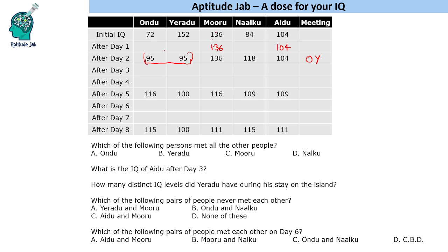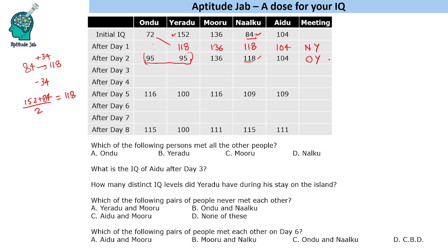O and Y met, so their total became 190 and they got that IQ. This tells us Nalku met someone on day 1 — Nalku's IQ was 84, now it is 118, an increase of 34. So there must be a decrease of 34 in someone else's IQ. Nalku must have met Yerudu: their total is 236, divided by 2 gives 118. On day 2, O and Y meet: (72 + 118) / 2 = 95.